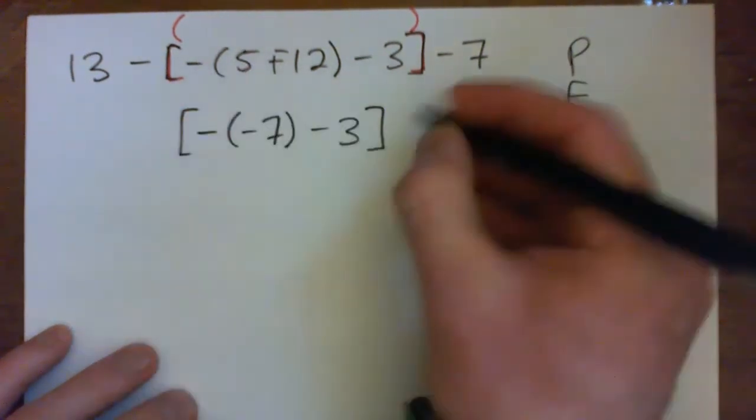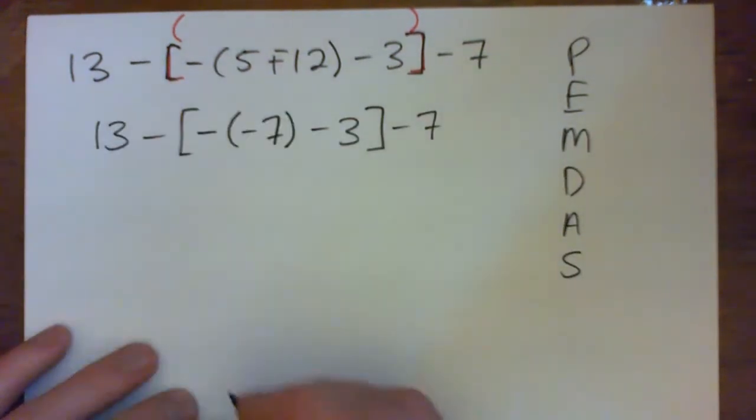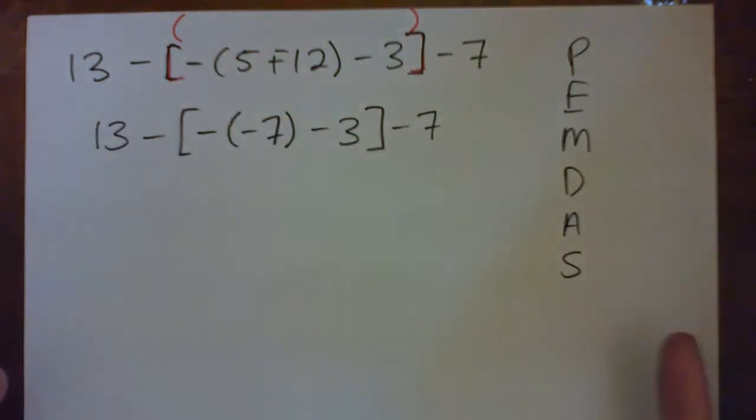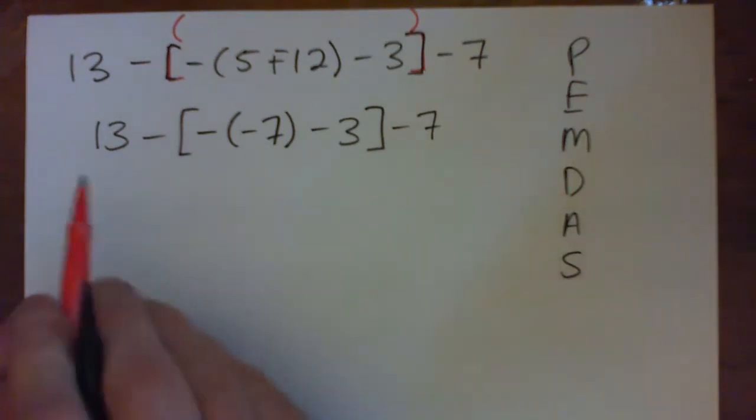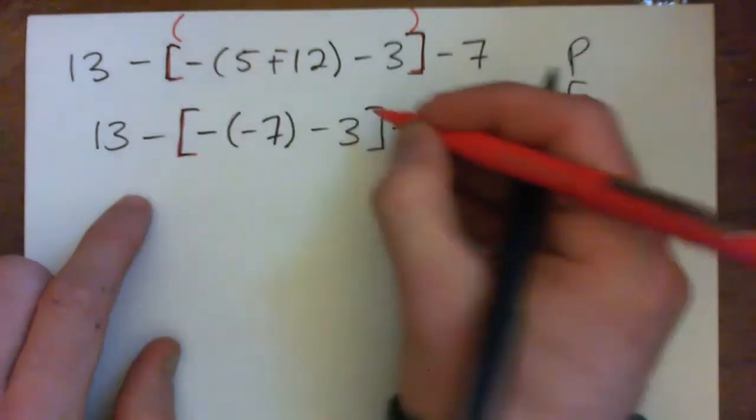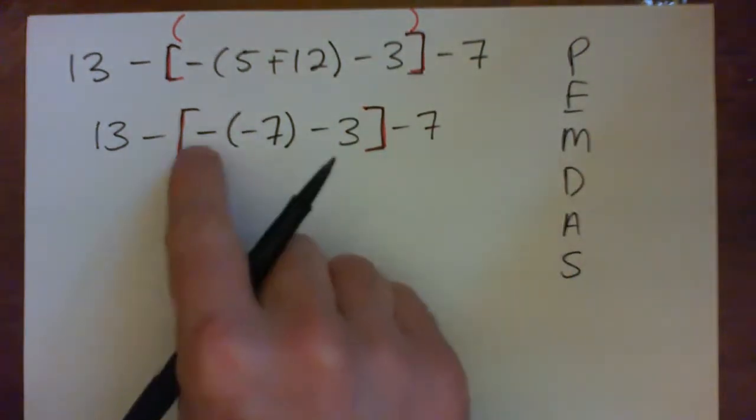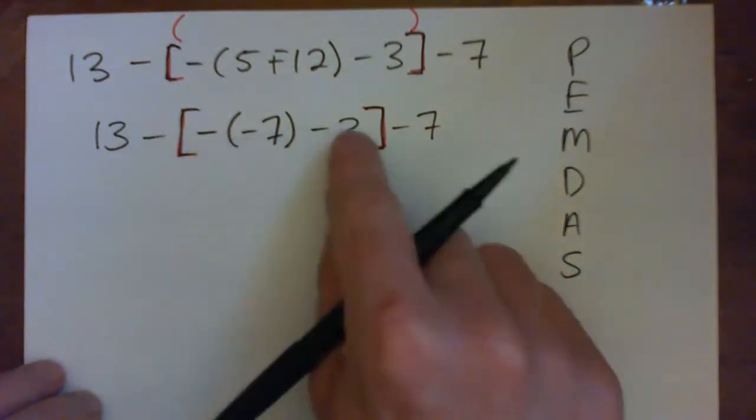So just do one calculation and write it all out. Be patient, there's no rush. If you make one mistake, you're wrong. So there's no rush, right? So going from left to right, again, we do what's inside the parentheses. So we go inside the square brackets here, right? And inside there, we've got a negative, negative 7, then minus 3.